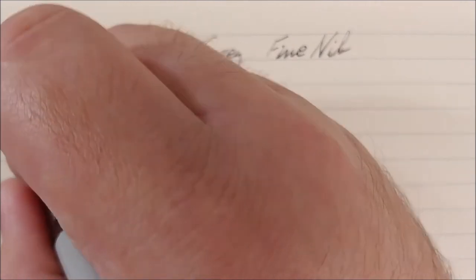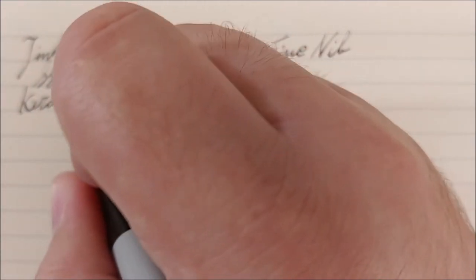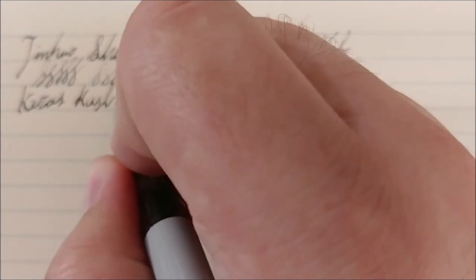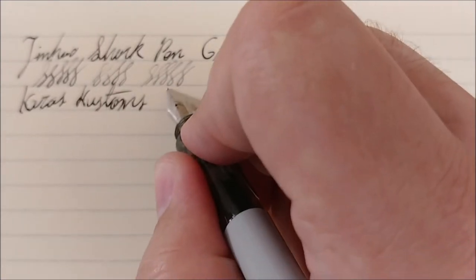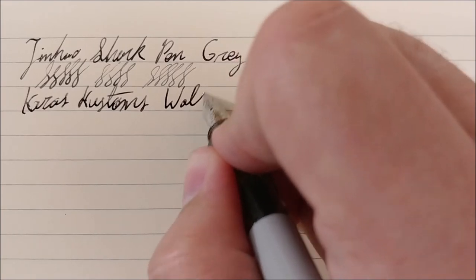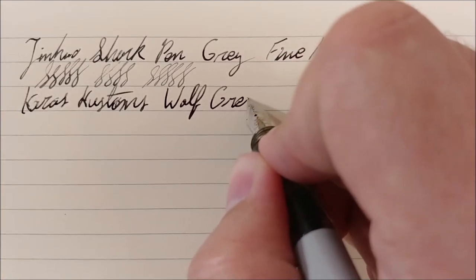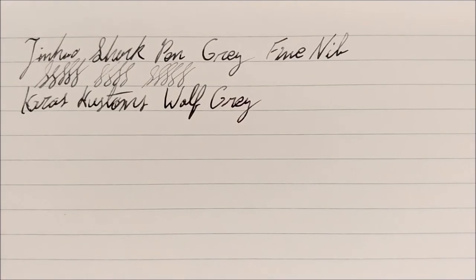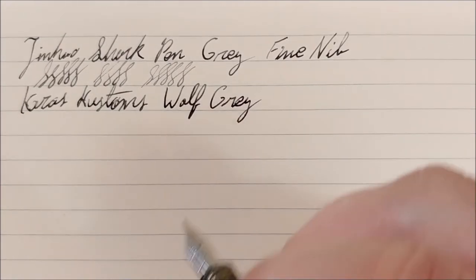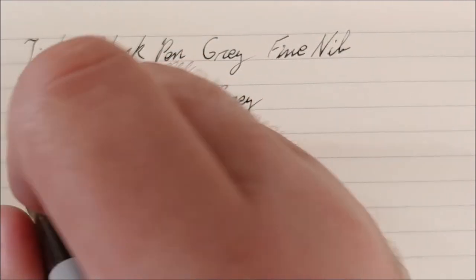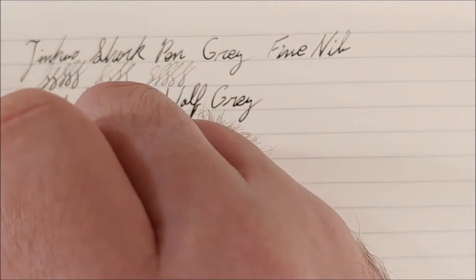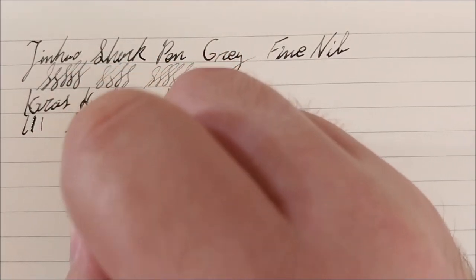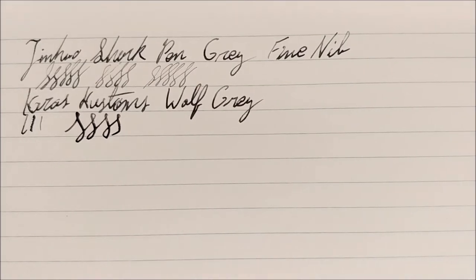Also this ink is Kara's Customs Wolf Gray. Really liking this ink so far. It's a very dark gray, which is about the only shade of gray I can tolerate. I really don't like lighter grays. So that's something. And also I'll show you a normal line, line with some pressure and a reverse writing line. So you can get some line variation out of here if you really bear down. I probably wouldn't push it too much though. It is a steel nib. And don't expect too much out of it either.